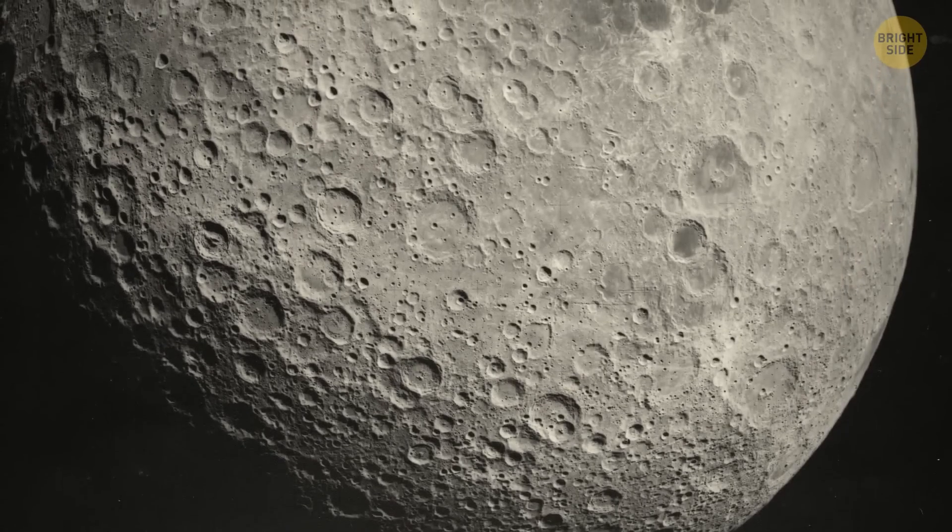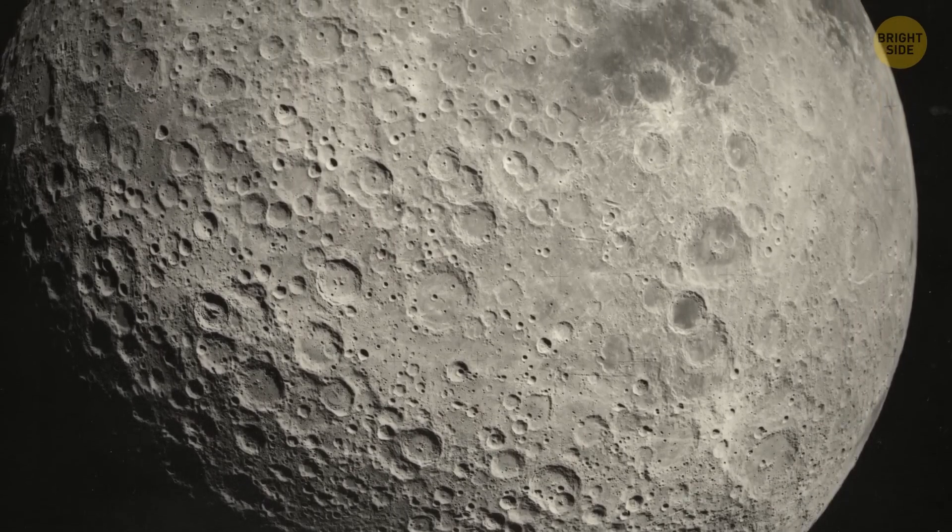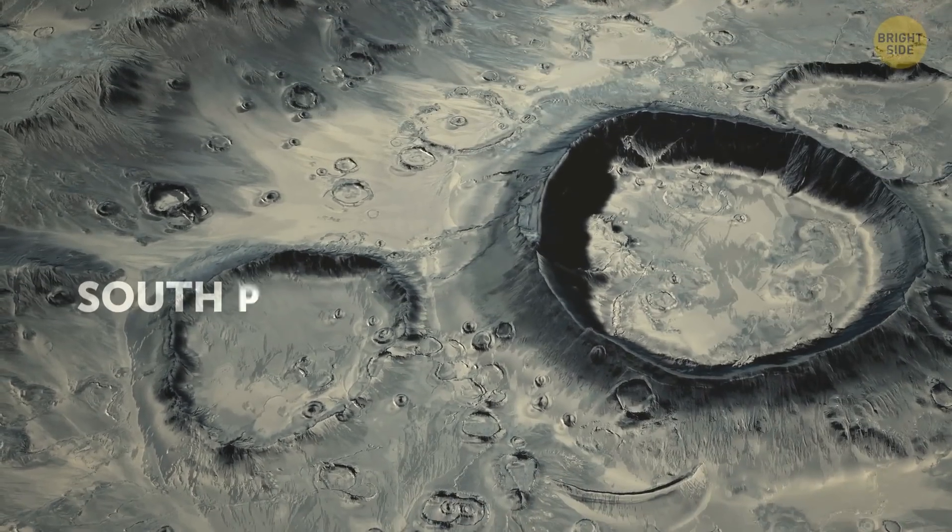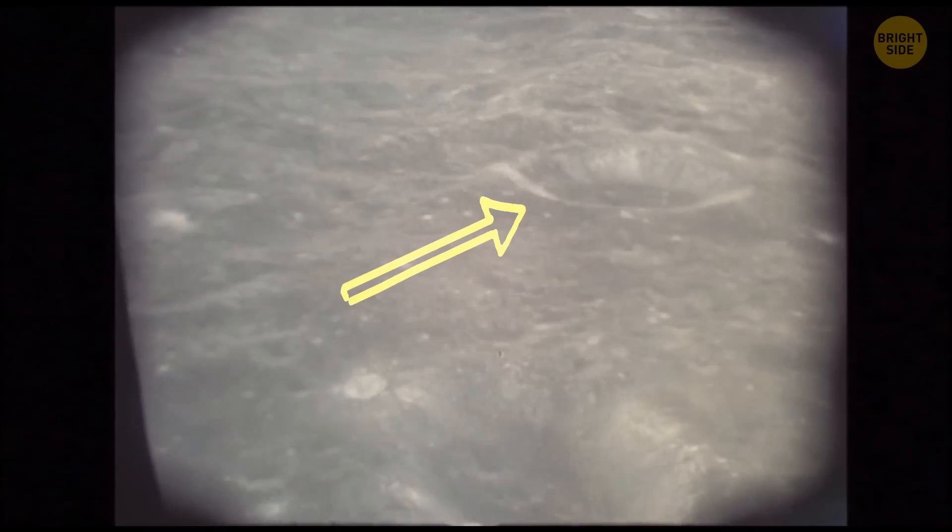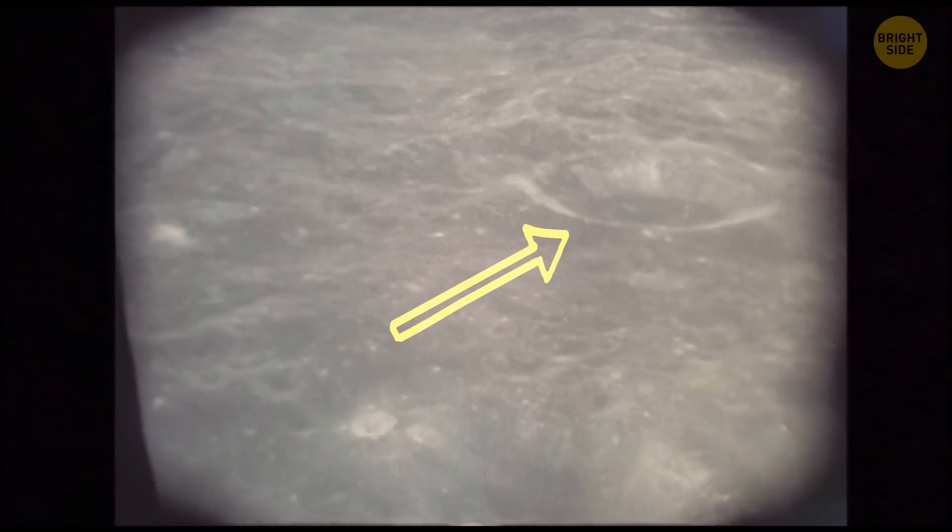And we even have pictures of this place. And there's one of the biggest craters in our entire solar system. The South Pole-Aitken Basin is as wide as two states of Texas. Yeehaw!